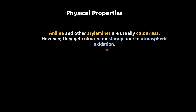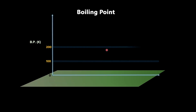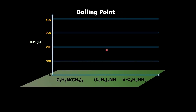Next comes the most important physical property, that is the boiling point. To understand boiling point, let's take three amines: one a tertiary amine, second one a secondary amine, and the third one a primary amine. The number of carbons are the same, so these are isomeric forms. We have N,N-dimethylethanamine, N-ethylethanamine, and butanamine. The molar mass of all three of them is 73.